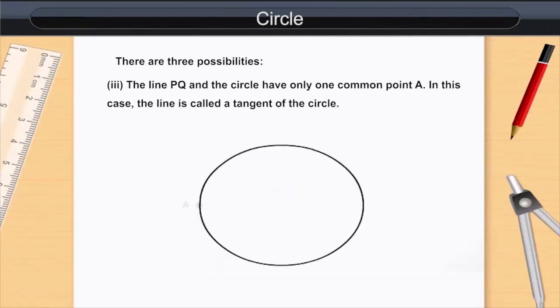Three: The line PQ and the circle have only one common point, A. In this case, the line is called a tangent of the circle.